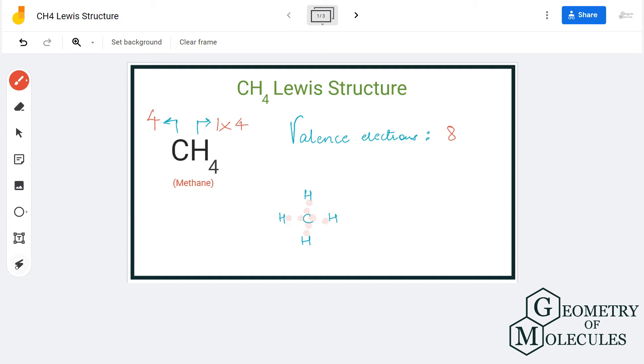Now you see that carbon here has eight valence electrons in its outer shell because it is sharing one valence electron of each hydrogen. And hydrogen has two valence electrons in its outer shell because it has shared one valence electron of the carbon atom.